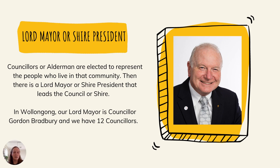Each local government has councillors or aldermen who are elected to represent the people who live in that community. There is a Lord Mayor or Shire President that leads that group of councillors. In Wollongong, our Lord Mayor is Councillor Gordon Bradbury, and we have 12 other councillors supporting him. An interesting fact is that he has been our Lord Mayor since 2011 — that's 10 years. We are actually due to have an election; it was meant to be in September but because of the lockdown it has been pushed back till December.